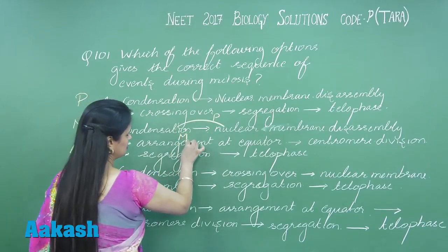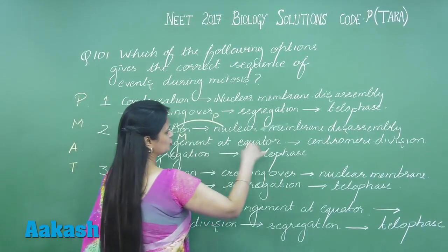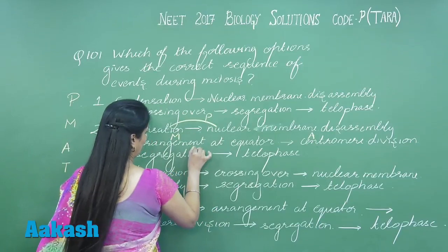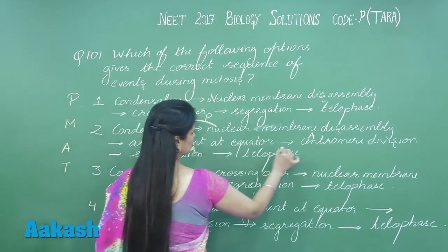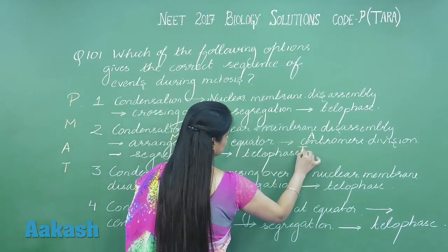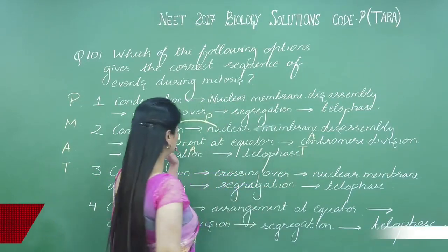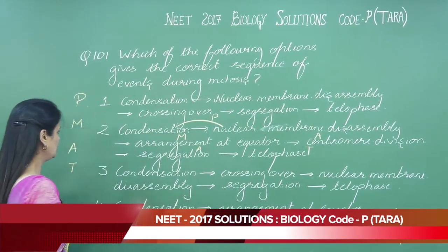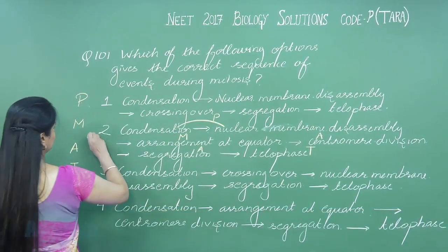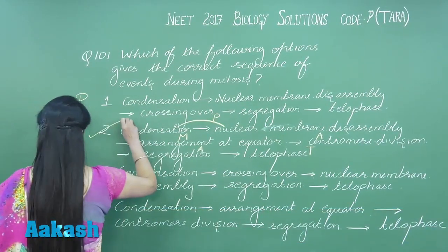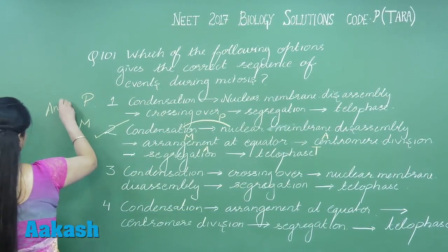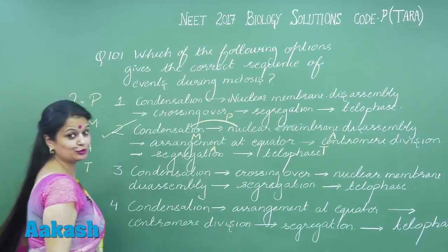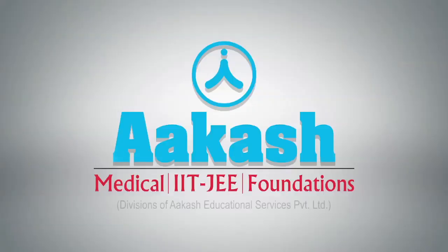So to summarize: these two events are for prophase, this one is for metaphase, these two are for anaphase, and the last one is telophase. This is the correct sequence for PMAT, making option number two the right answer. Let's move on to question 102.